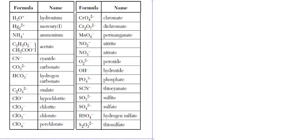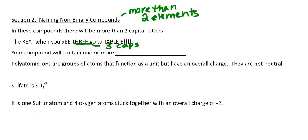The things on Table E are called polyatomic ions. When you have a compound with more than two capital letters, you have one or more polyatomics in it. Polyatomic ions are a group of atoms that function as a unit, but they have an overall charge — they are not neutral. If they were neutral, we would call them compounds, but they have an overall charge, so we call them ions.